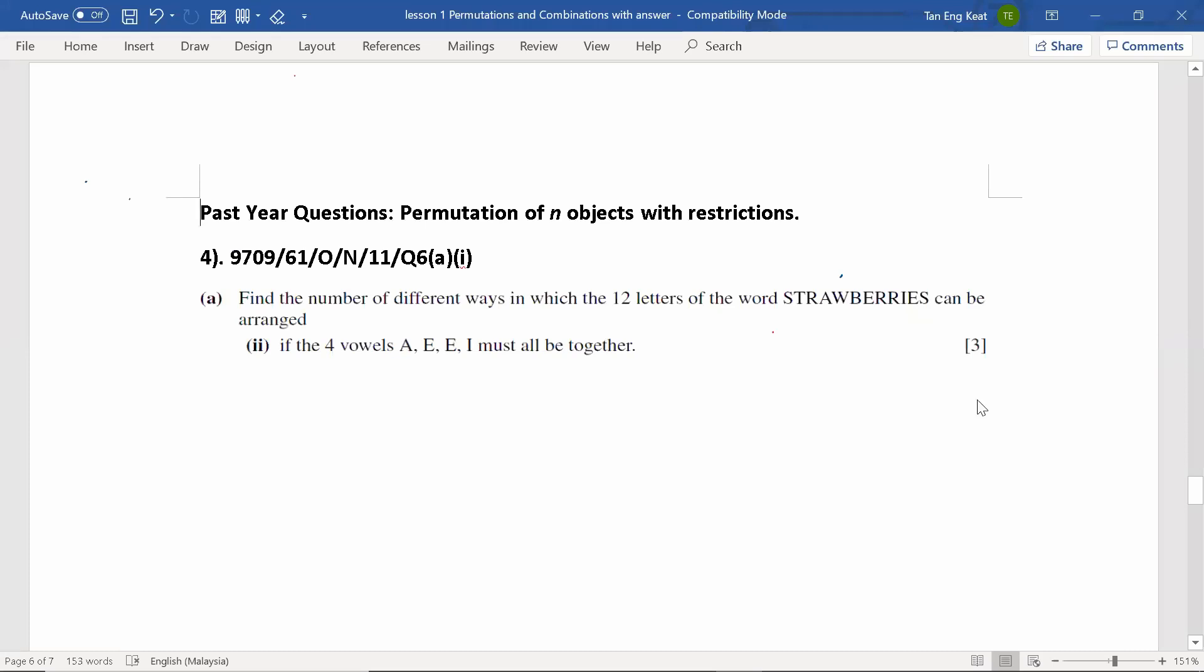Hi, in previous lesson, we discussed the multiplication rule. Which is, an event can be done in R ways, and the other event can be done in S ways. To find the total number of ways, we multiply them together.